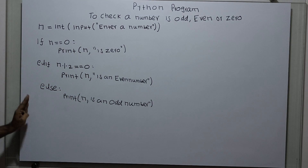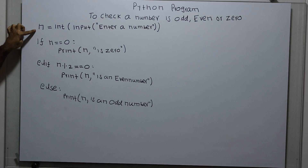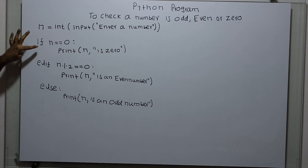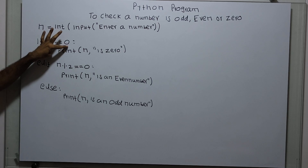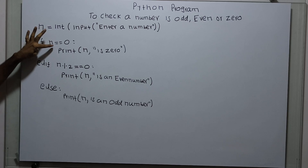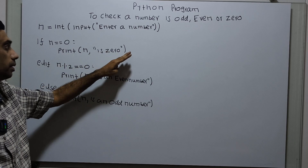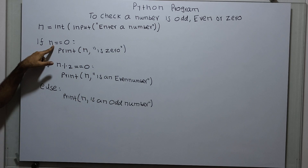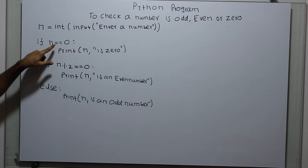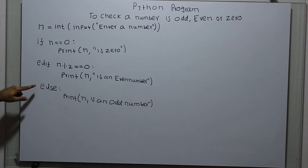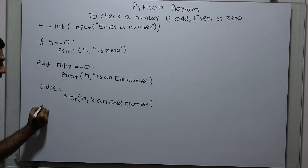So this is the program. First, I am getting input from the user and storing it in the variable n as an integer. I am checking if n == 0. Double equal to is a comparison operator. If the value of n equals 0, I am printing 'n is 0'. If this condition is true, the statement under the block will get executed, and the control will come out of the entire if/elif/else statement.